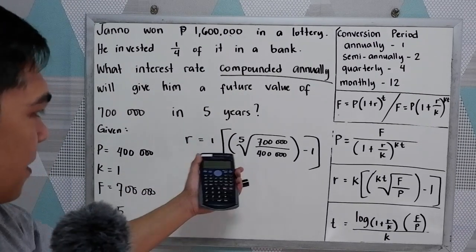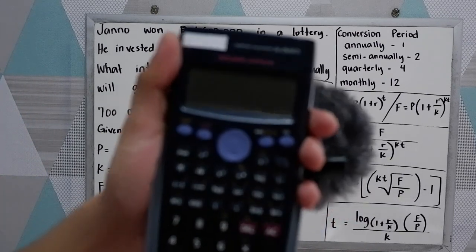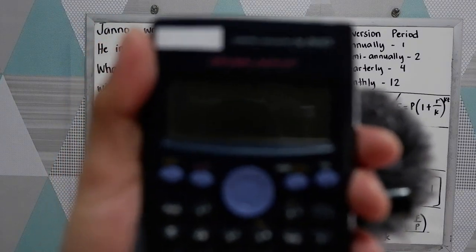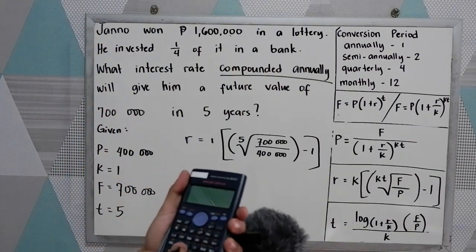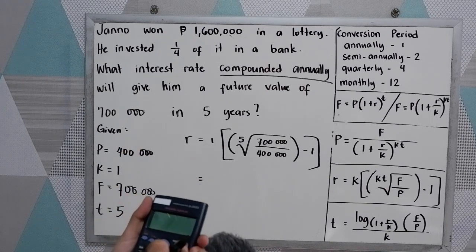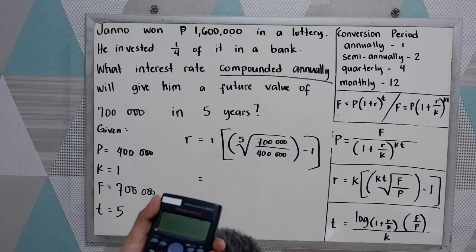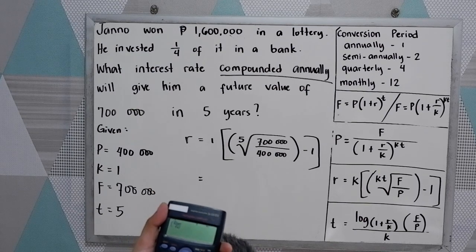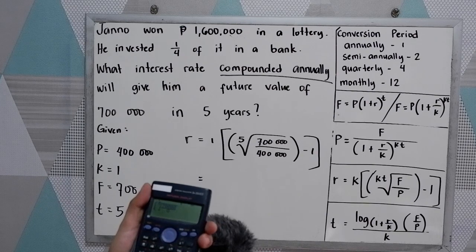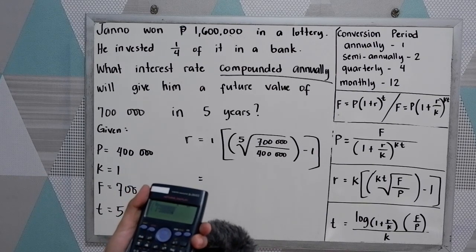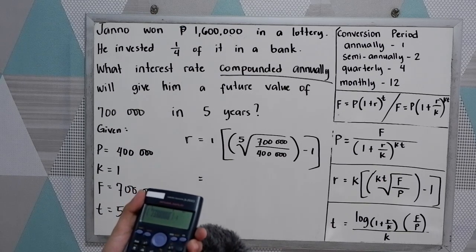Now we can just simply insert that in our calculator. So we have one, parenthesis, fifth root. So shift, root sign, five, then 700,000 over 400,000, then close, minus one.